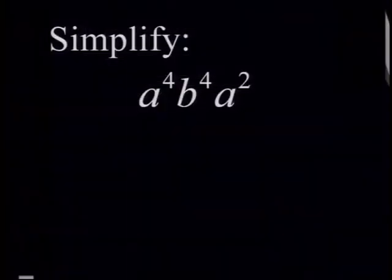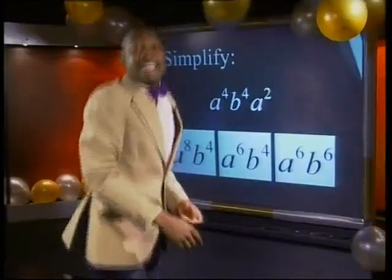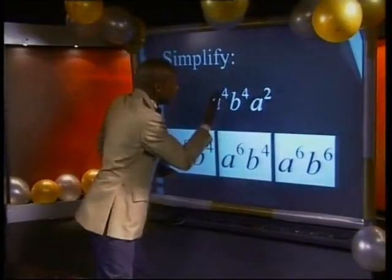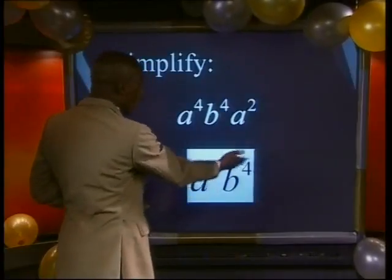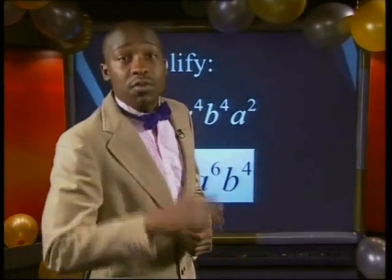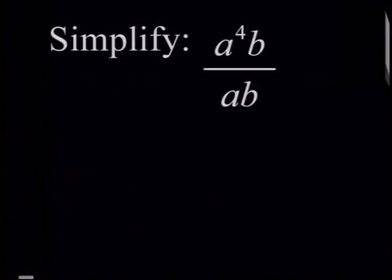Here is number one: a to the power of 4, multiplied by b to the power of 4, multiplied by a to the power of 2. Here are three possible answers — which one is correct? Did you add 2 and 4 to get a to the power of 6, multiplied by b to the power of 4? That is correct. Let's move on to the next question.